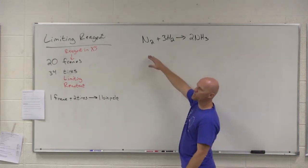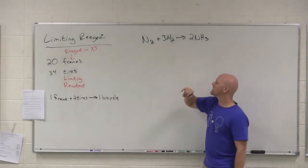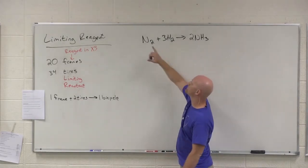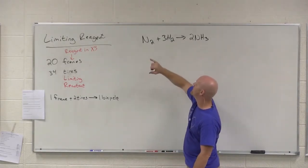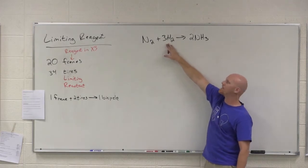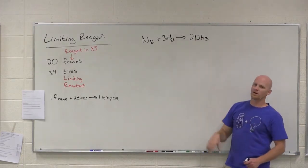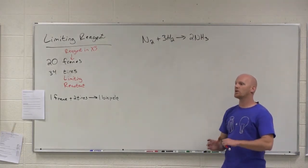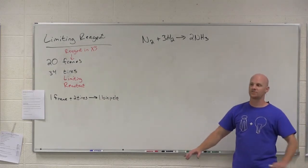It only tells you the ratio in which things react. So this ultimately tells you is that for every one mole of nitrogen you do have, you will need three times as many moles of hydrogen to produce twice as many moles of NH3. That's what it tells me, but it never tells me what I actually have to start with.